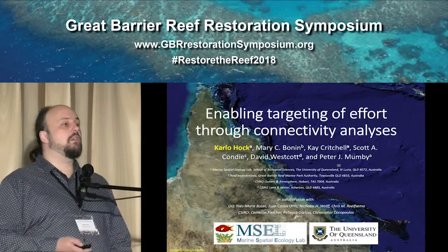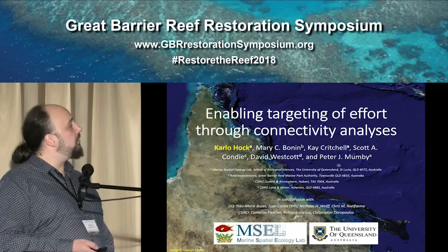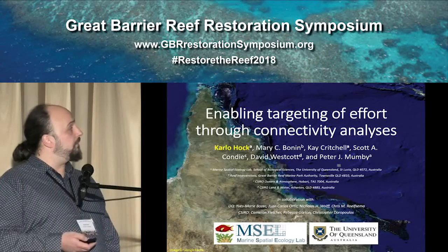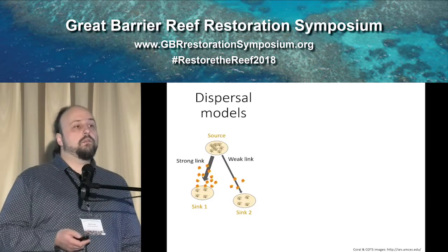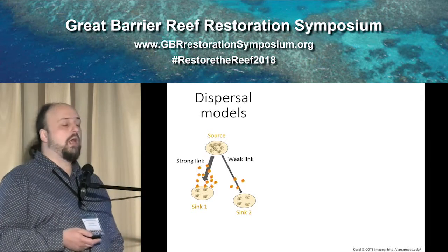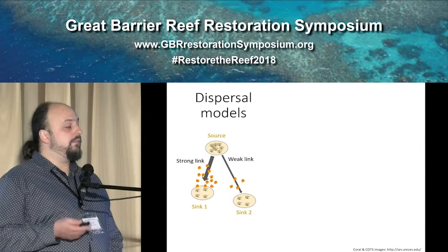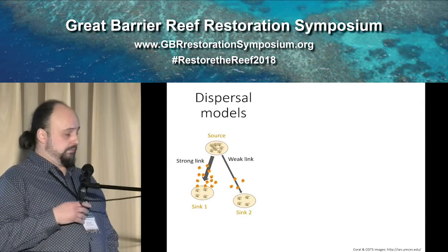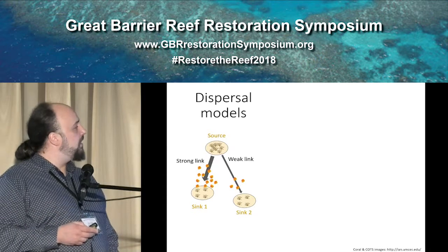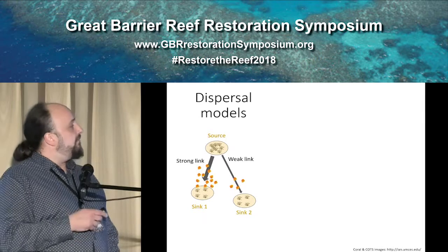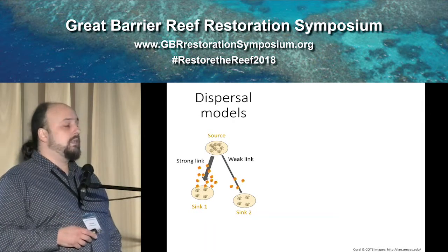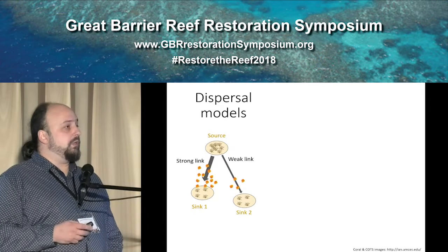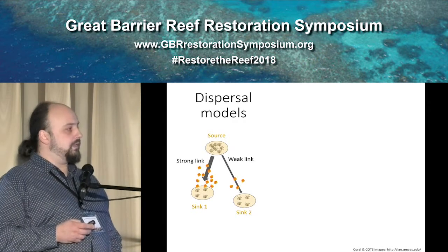I'm going to talk about connectivity, which means larval exchanges between reefs of both coral and COTS, and how this can help us target effort better when it comes to crown-of-thorns control. This is actually a modeling study, so we use larval dispersal models to simulate how larvae spread from populations on source reefs and where they disperse. For that we use indicative reef boundaries as both sources and sinks, and then we use simulated hydrodynamics from oceanographic models — e-reefs hydrodynamics coupled with Connie from Scott Condie and his team at CSIRO as a particle tracking tool.